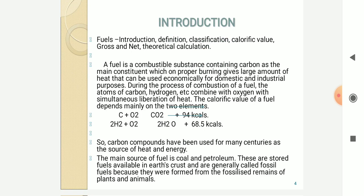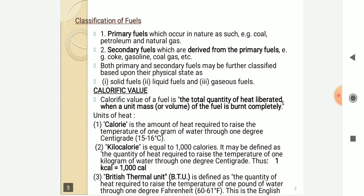The calorific value of fuel depends upon these elements. Carbon compounds have been used by many countries as a source of heat energy. The main sources of fuel and petroleum are stored in the earth's crust and are generally called fossil fuels because they were formed from fossil remains of plants and animals. On the basis of their use and application, they are classified as primary fuels, which occur in nature such as coal, petroleum, and natural gas.